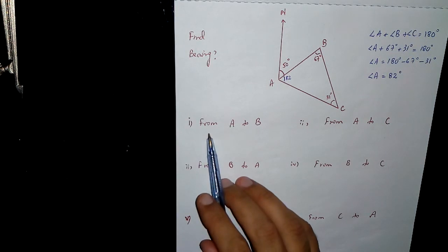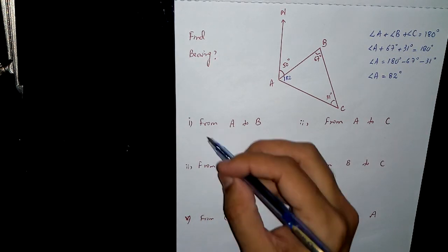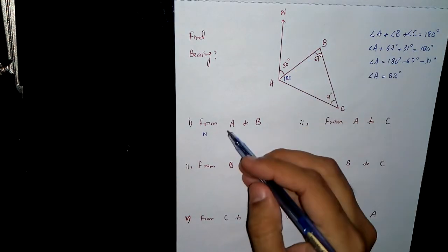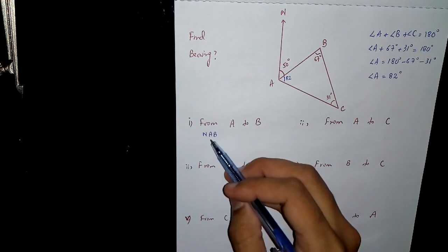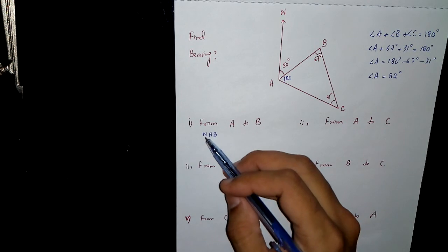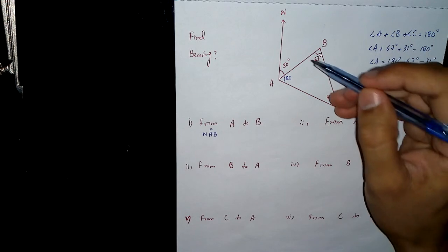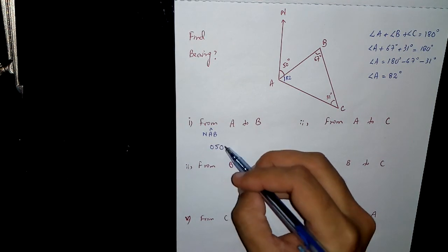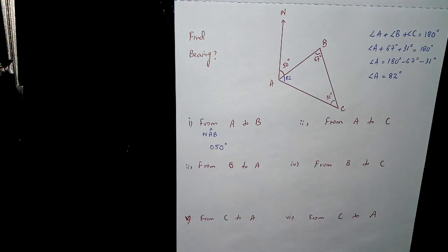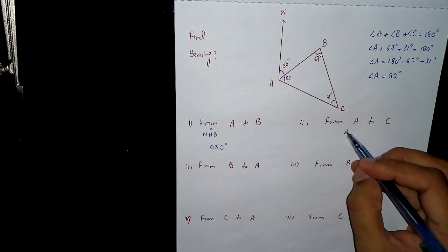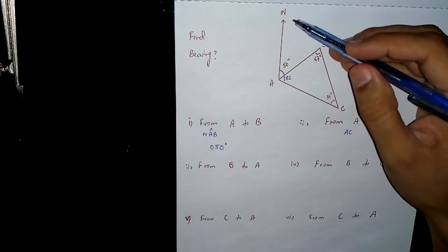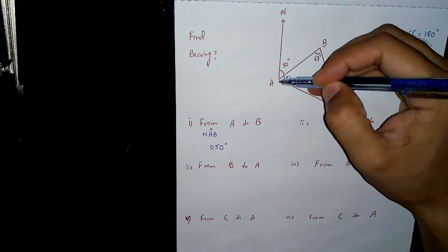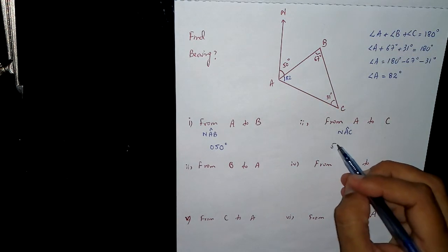Now I have to find the bearing from A to B. From A to B — every bearing starts from the North. So it starts from North, going to A, and then to B. The angle is NAB, and you can see that angle NAB is 50 degrees, so I will write bearing 050. Now from A to C, the angle is NAC, which is 50 plus 82, that is 132 degrees.